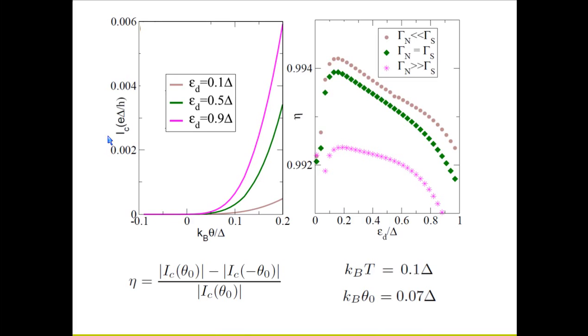When you plot the charge current as a function of the temperature gradient, it shows strong rectification and diode effects with corresponding efficiencies eta very close to 1, irrespective of the tunnel broadening conditions. The details can be found in the paper.